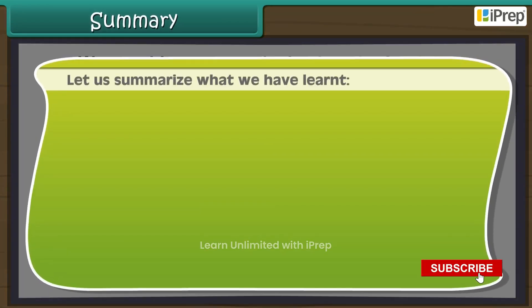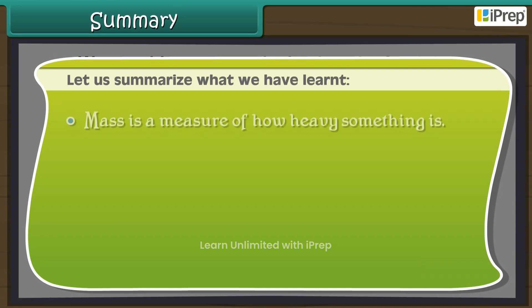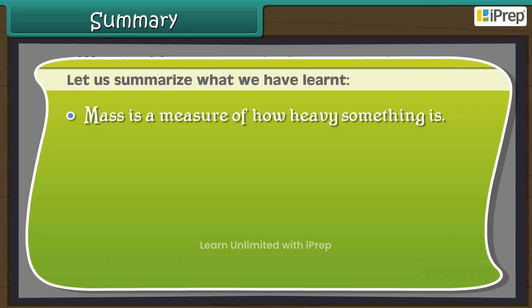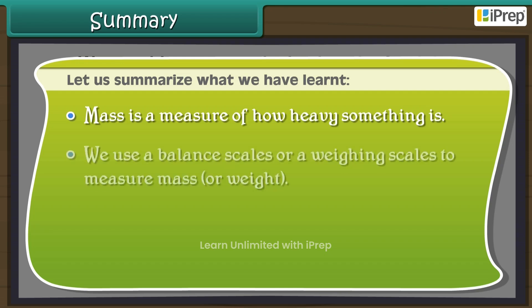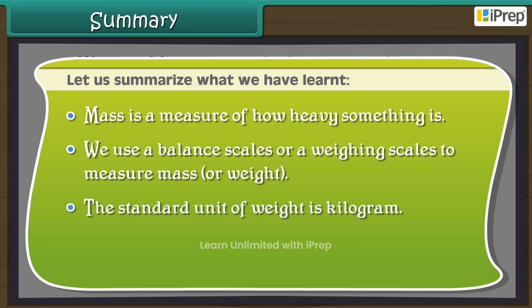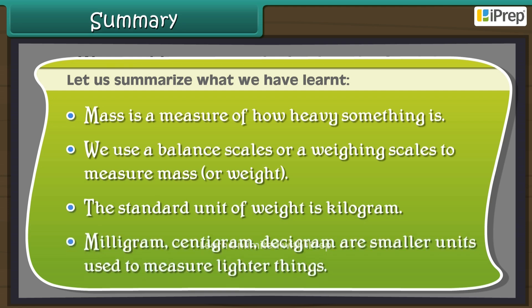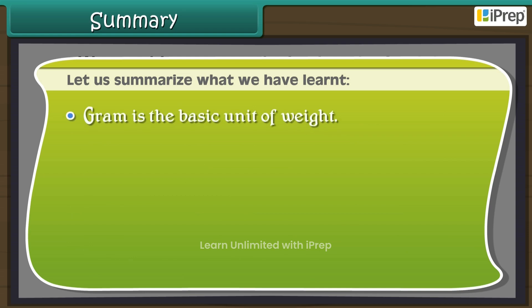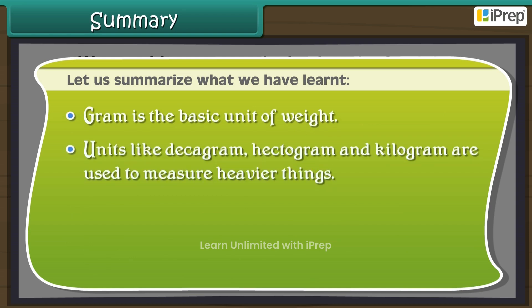Summary: Mass is a measure of how heavy something is. We use balance scales or weighing scales to measure mass or weight. The standard unit of weight is the kilogram. Milligram, centigram, and decigram are smaller units used to measure lighter things. Gram is the basic unit of weight, and units like decagram, hectogram, and kilogram are used to measure heavier things.